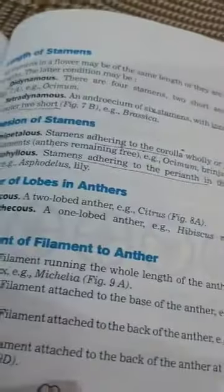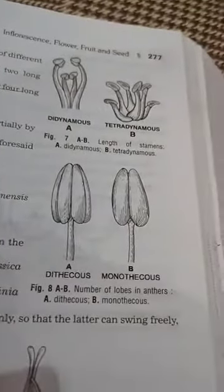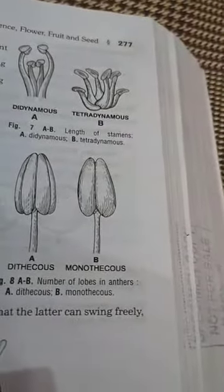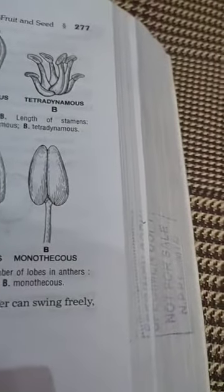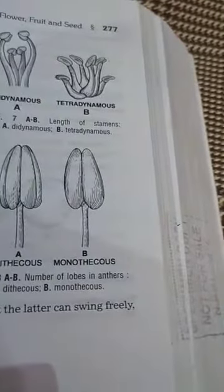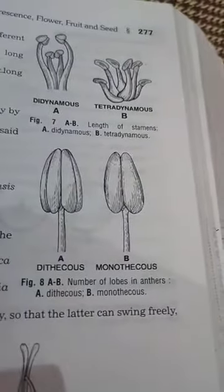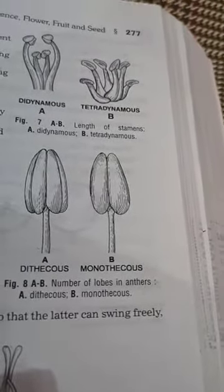If you look at the number of anther lobes: if the anther has one lobe, it is called monothecous; if it has two lobes, it is called dithecous.